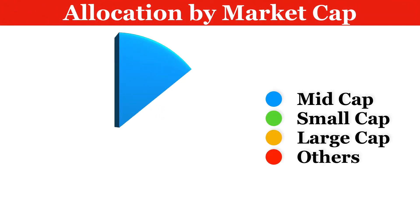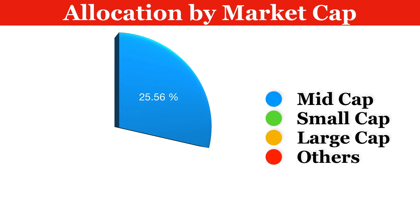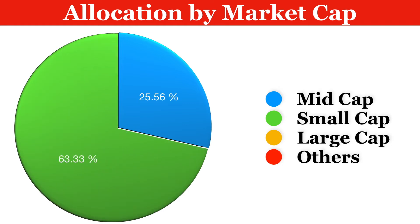In this section we will understand the fund allocation by market capitalization. Nearly 25.56% is being allocated to stocks listed in the mid-cap category. Mostly 63.33% is being allocated to stocks listed in the small cap category. As the name suggests, the main focus is investing in small cap stocks.